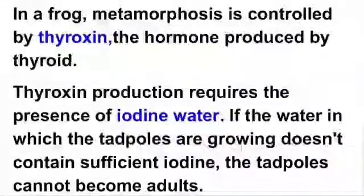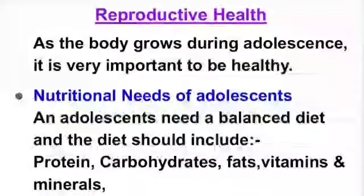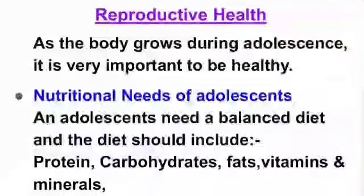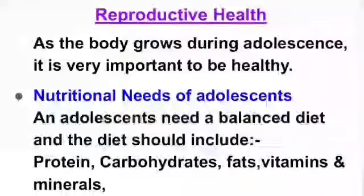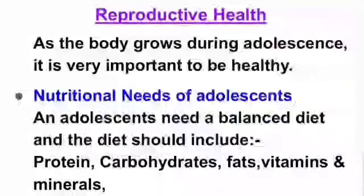In this topic, we have learned the role of hormones in completing the life of insects and frogs. Our next topic is reproductive health. A person is said to be healthy if he or she is physically and mentally fit. As the body grows during adolescence, it is very important to be healthy. To keep the body healthy, every human being at any stage needs a balanced diet. A person must also observe personal hygiene and undertake proper physical exercise. During adolescence, these become even more essential as the body is growing. Now we discuss nutritional needs of adolescence.